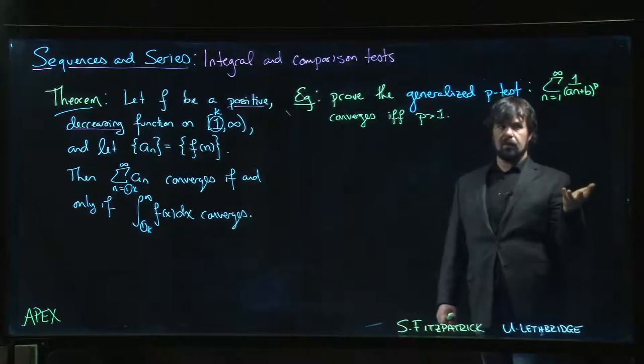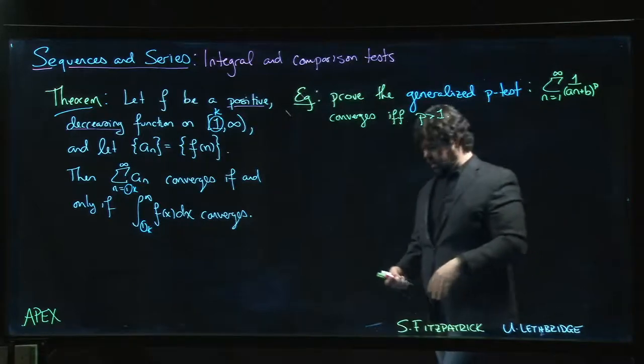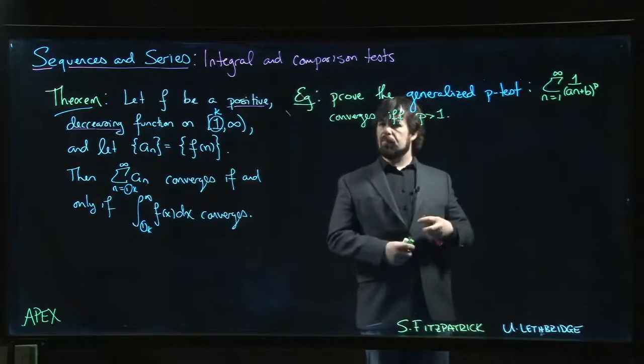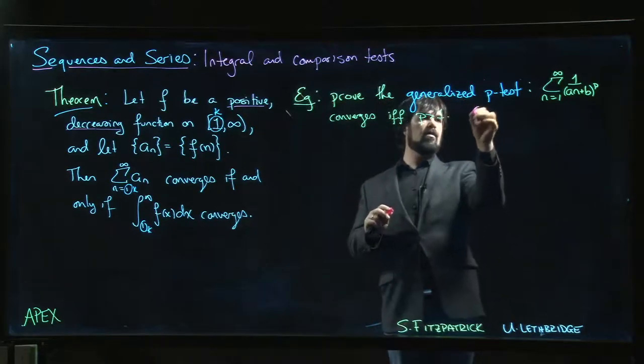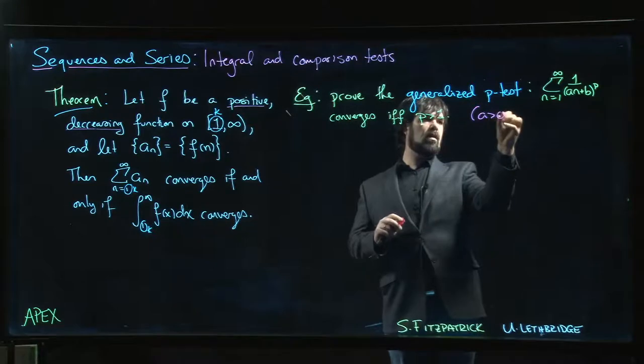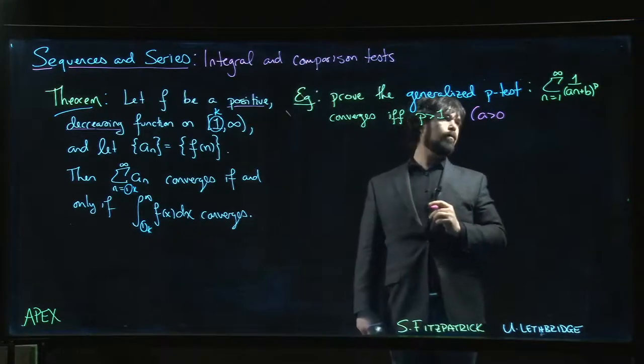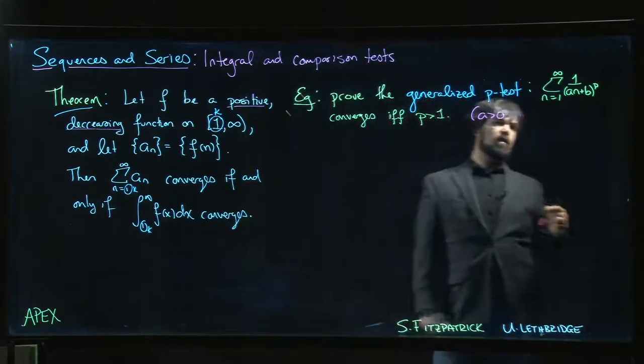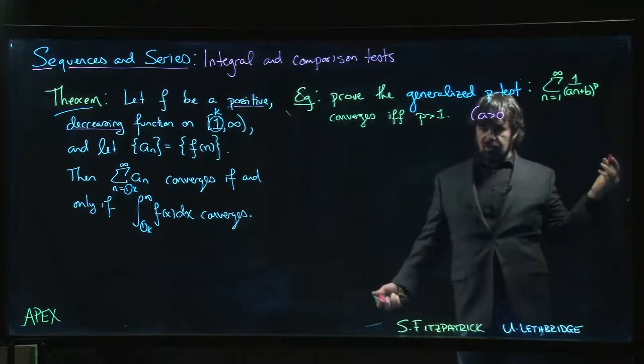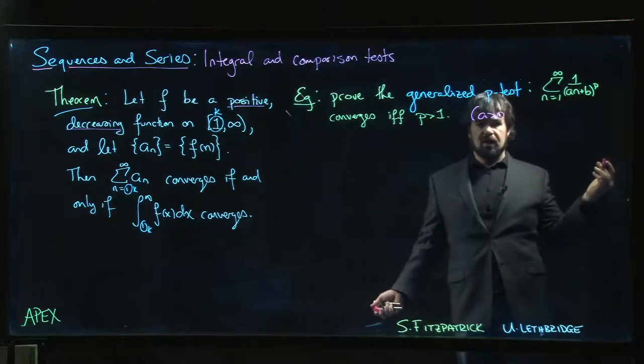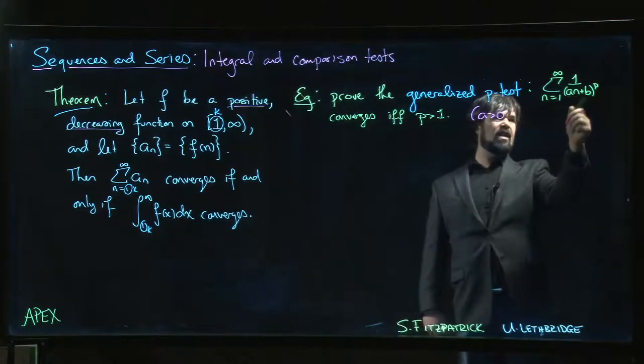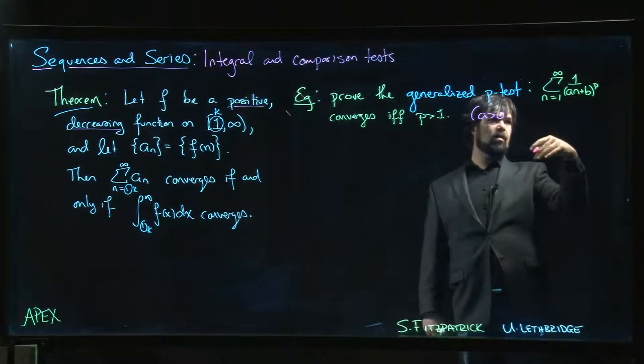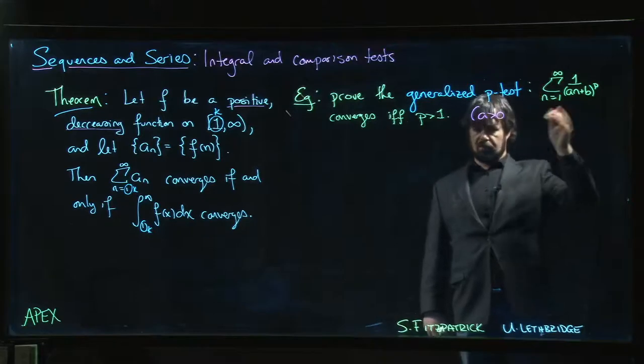One thing we should probably require: let's specify that a is positive. If a is equal to zero, then these are just constants and we're adding up a constant—it's going to diverge, right? So we need a to be positive. If a was negative, you could factor the minus sign out. You get a minus one to the p; it's either plus or minus—constant multiple, we don't worry about that.